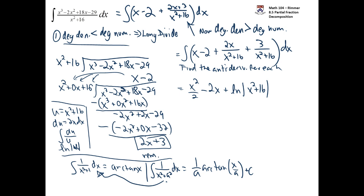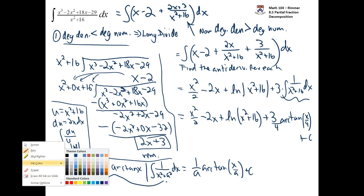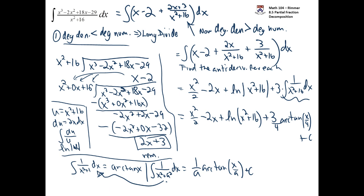So with us, we have this 3 constant, and then we're integrating 1 over x squared plus 16. Using the formula, that becomes 1 over 4, the arctan of x over 4. So we have for our final answer, x squared over 2, minus 2x, plus the natural log of x squared plus 16, plus 3 fourths, the arctan of x over 4, plus a constant. And that would be your antiderivative of the original rational function.